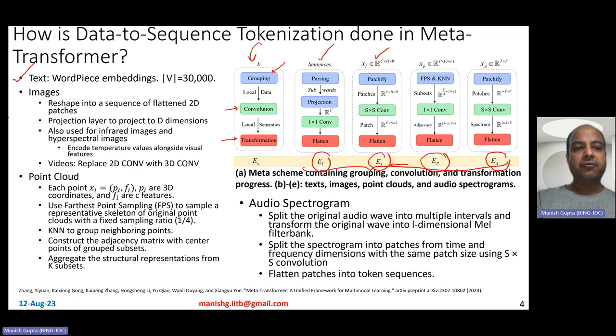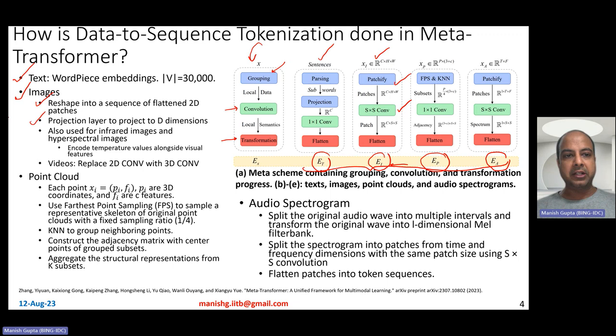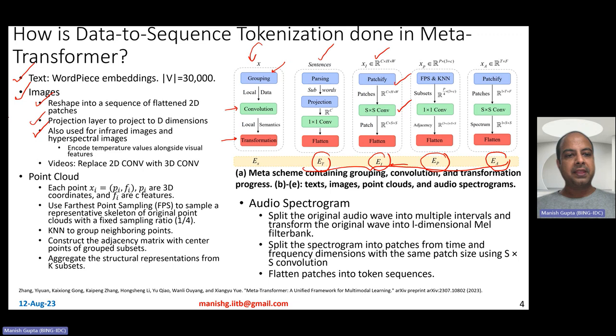For images, you reshape them into a sequence of flattened 2D patches, then use a projection layer to project each patch to D dimensions using S×S convolutions, followed by a final projection layer to get D-dimensional embedding tokens. Infrared and hyperspectral images are processed the same way, with temperature values added as an extra channel alongside visual features. For videos, the same philosophy applies but using 3D convolutions instead of 2D.